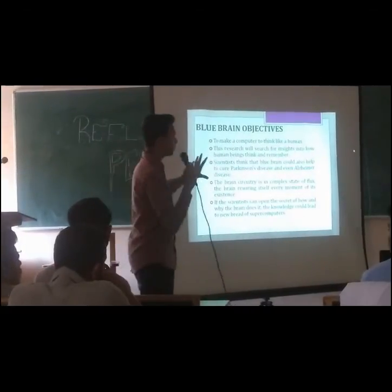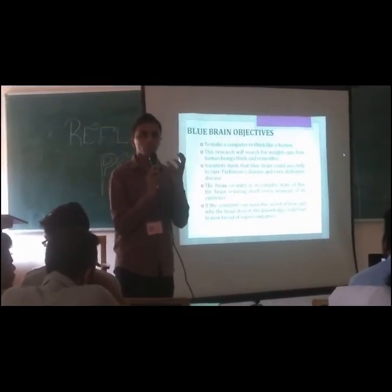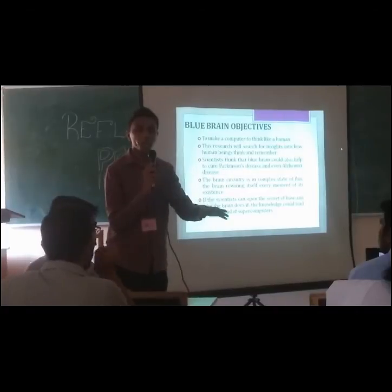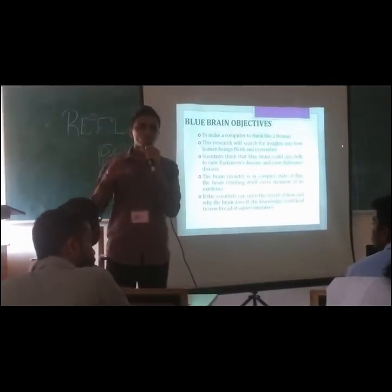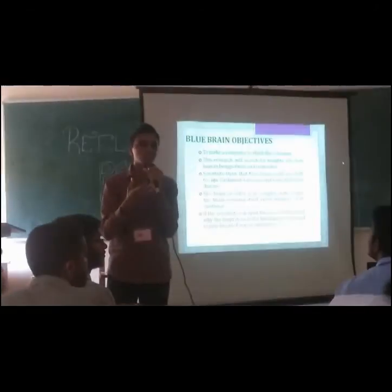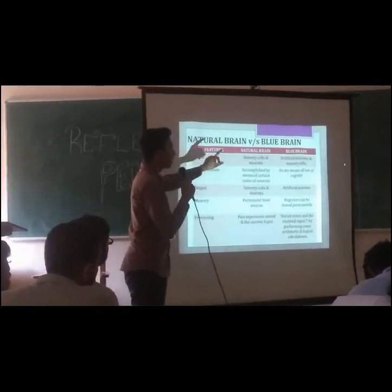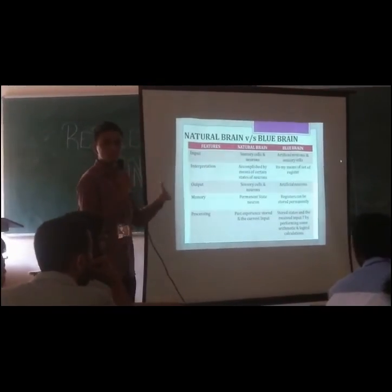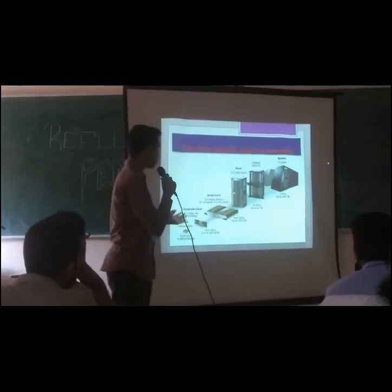Blue Brain objectives: to make a computer think like a human — that is the major point. Our computers are very smart, but they lack insights into human thinking. In future, at age 40 or beyond, we may get diseases like Parkinson's or Alzheimer's. We will compare natural brain inputs — synthetic cells and neurons — against artificial neurons in the Blue Brain. The technology we are going to use is Blue Gene supercomputers. IBM has developed this.